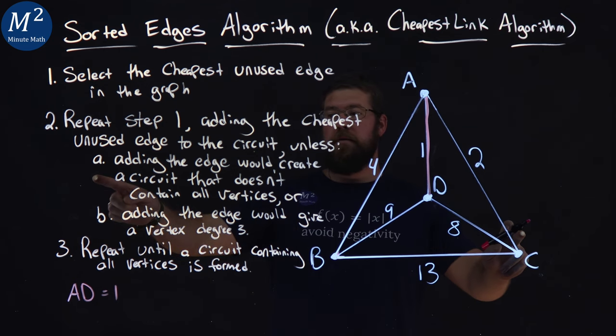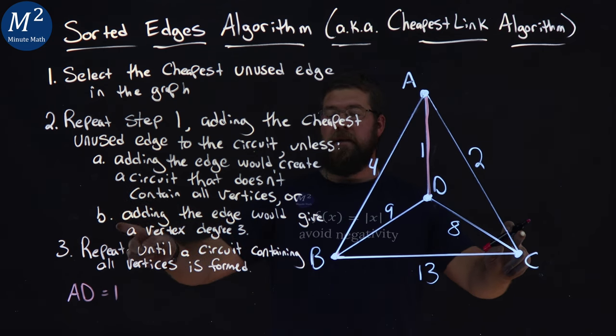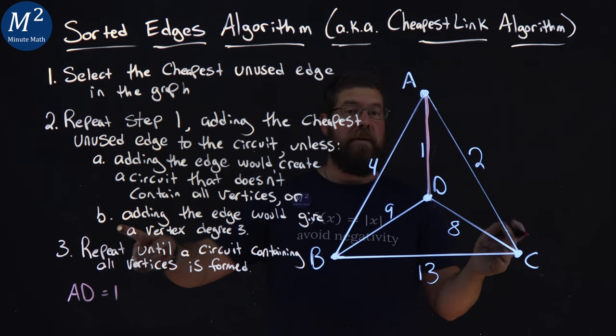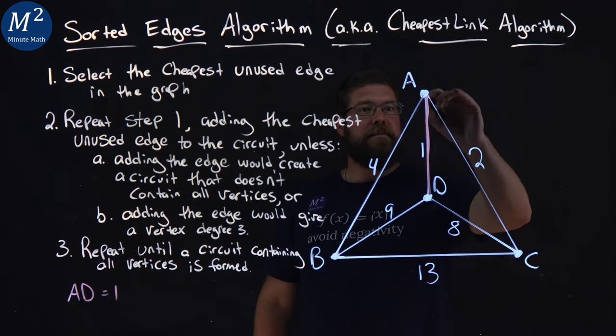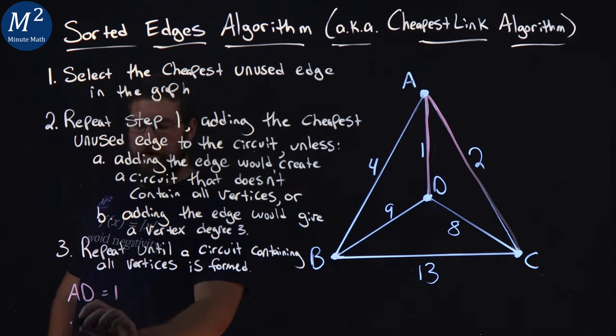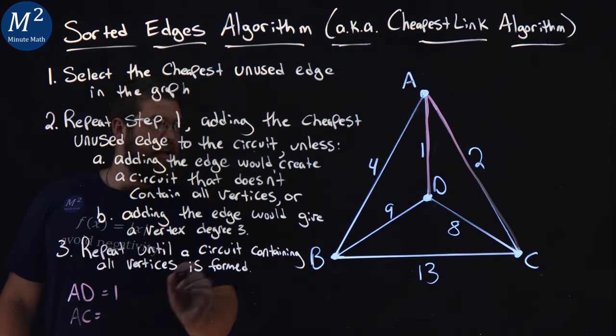Let's look at our rules here. Do we create a circuit? No. Does that create anything with degree three? No. A would be degree two. That's fine. So we go AC. So AC would be next, and it has a weight of two.